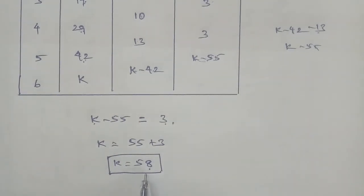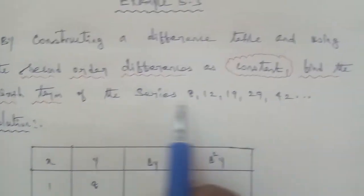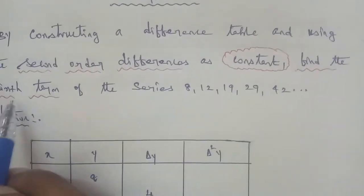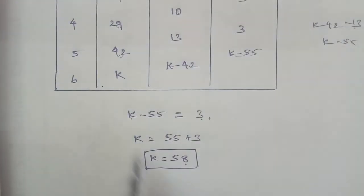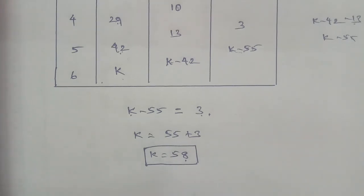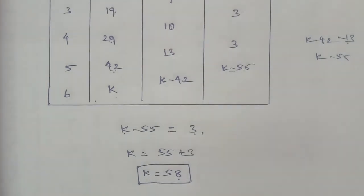So the sixth term of the series is K equals 58. Therefore, the answer to finding the sixth term is 58. Thank you.